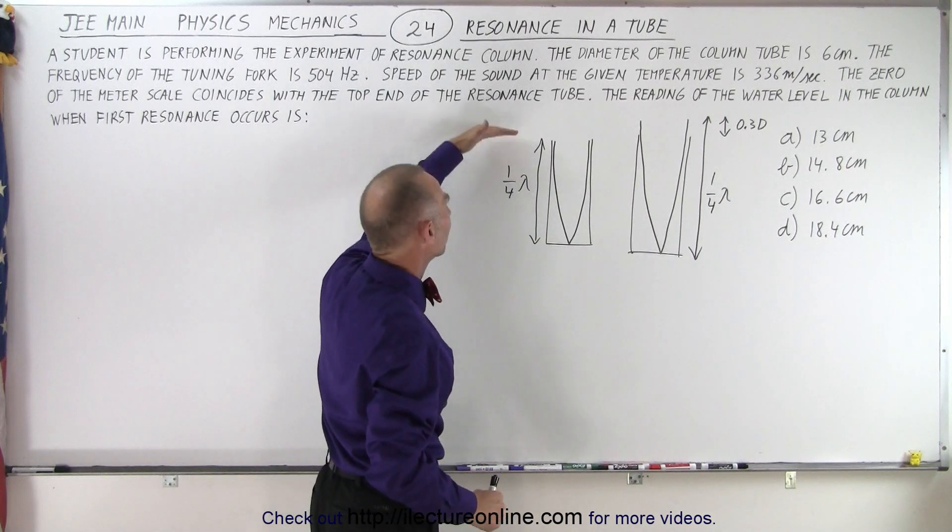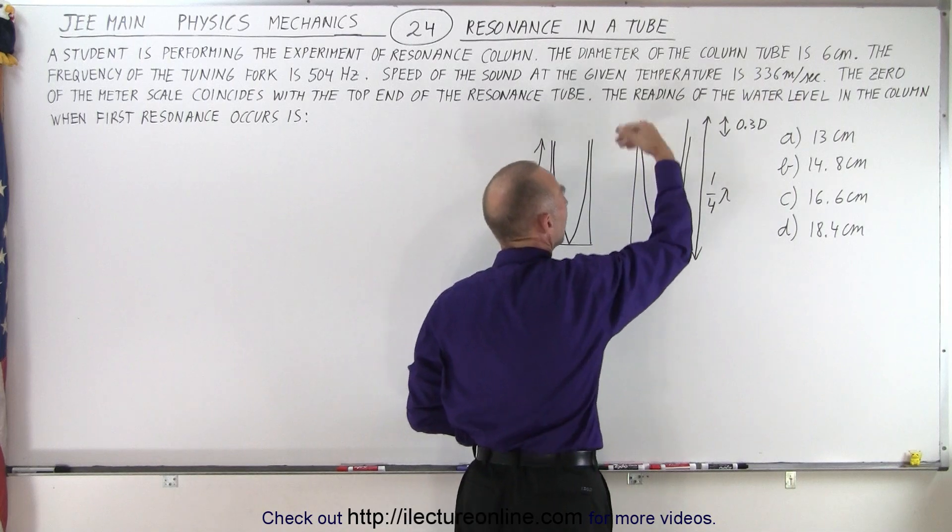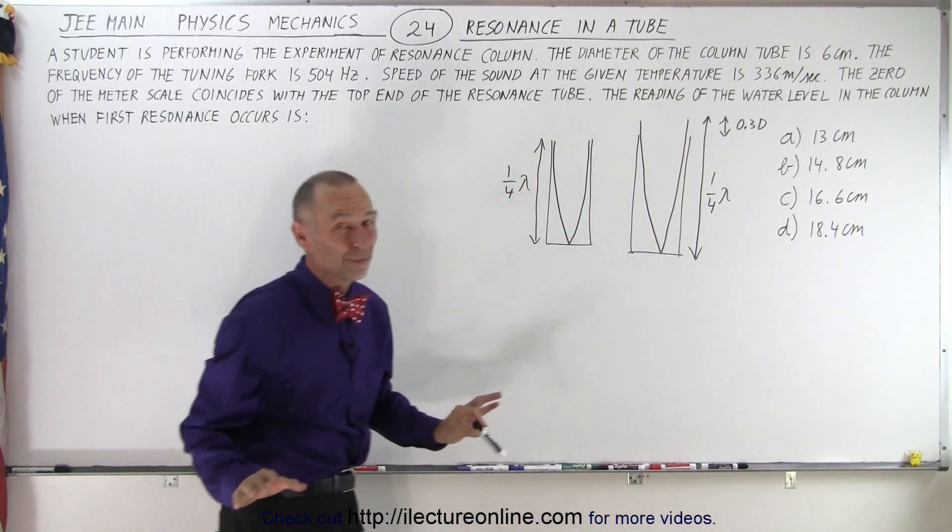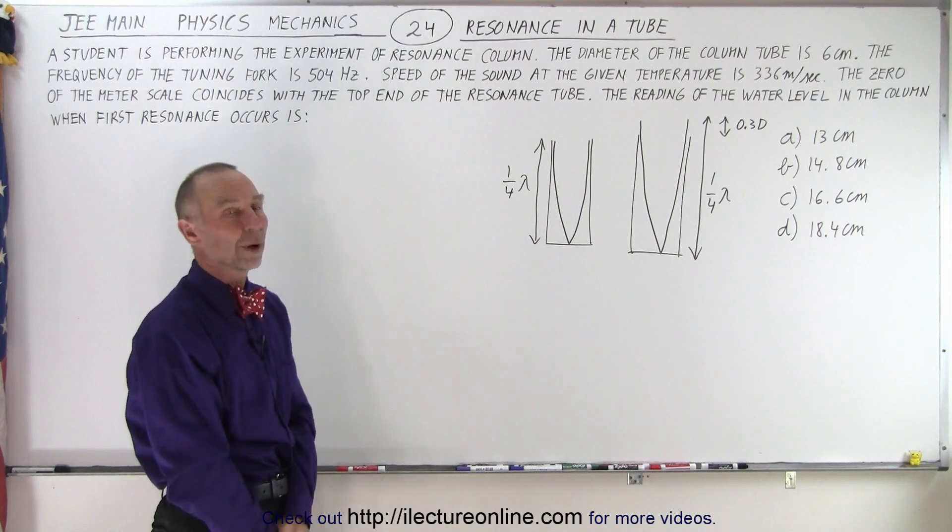But we typically look at first resonance looking like that, where the quarter wavelength stops at the very top of the tube, instead of 0.3 times the diameter above the tube. So since they gave us the diameter, we're going to assume the situation on the right.